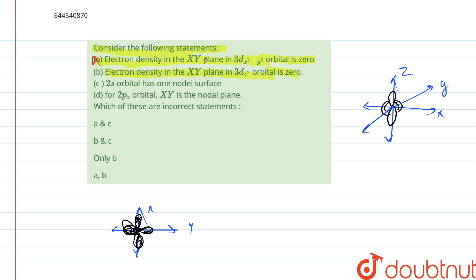So therefore the xy plane does not have electron density zero. So b is also incorrect.